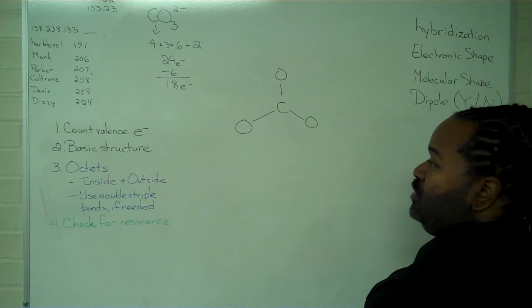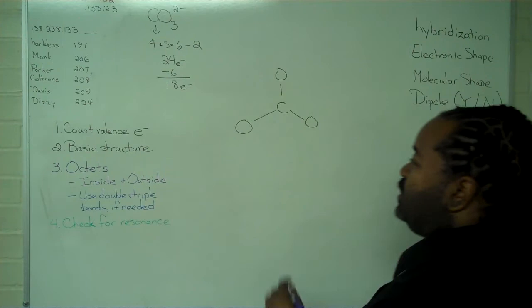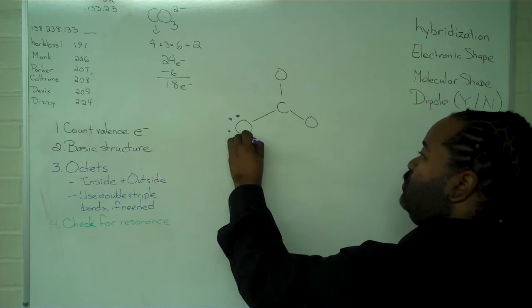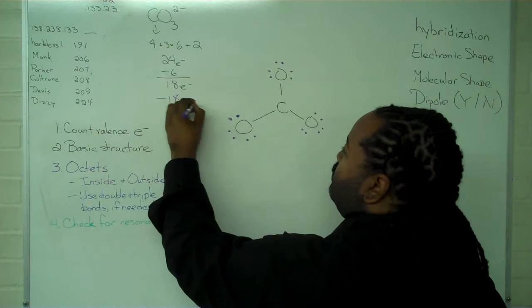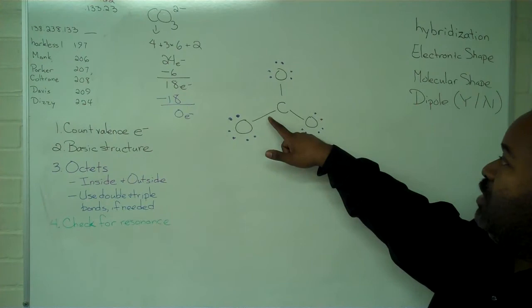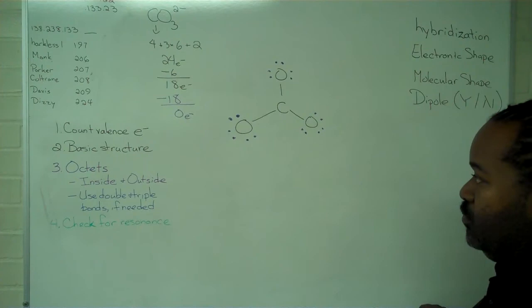Now, I have to assign octets inside and outside. So we start with the outside atoms, and their octets require me to take up 6 electrons each. Now, if you do 6 times 3, which we had to do in the first step, it will recognize that it's going to be all 18 of the electrons that I have to work with. So this creates a problem, because now I have used all of the electrons, and we can see that carbon has 2, 4, 6 around it. So this will not work.